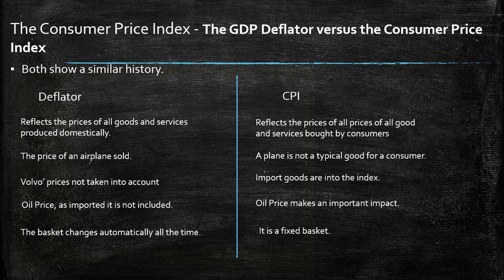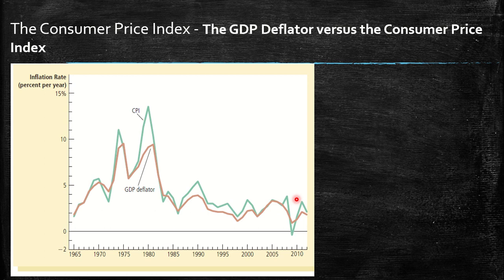The CPI uses a fixed basket, while the GDP deflator's basket changes automatically over time. A graph comparing the two shows they behave similarly, with some specific gaps — for example in the late 1980s and around 2009. The y-axis shows the inflation rate in percent per year; the x-axis shows time. The main explanation for the gap around 1979 is oil prices: the CPI weighted oil prices differently than the deflator because oil is an imported good.